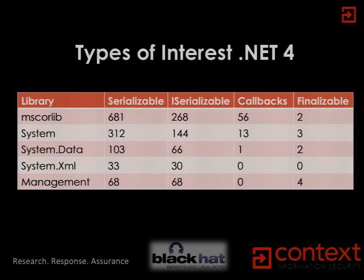So I wrote a program to hunt for bad stuff — a tool to go searching for serializable types. This is an example of five main libraries in the framework with rough counts of serializable classes. For example, MSCorLib — the basic library required in every .NET application — has about 681 serializable classes. Considering there are only about 1800 classes in the entire library, that's over a third. Of those, 268 have custom serialization mechanisms which might let you do something bad.